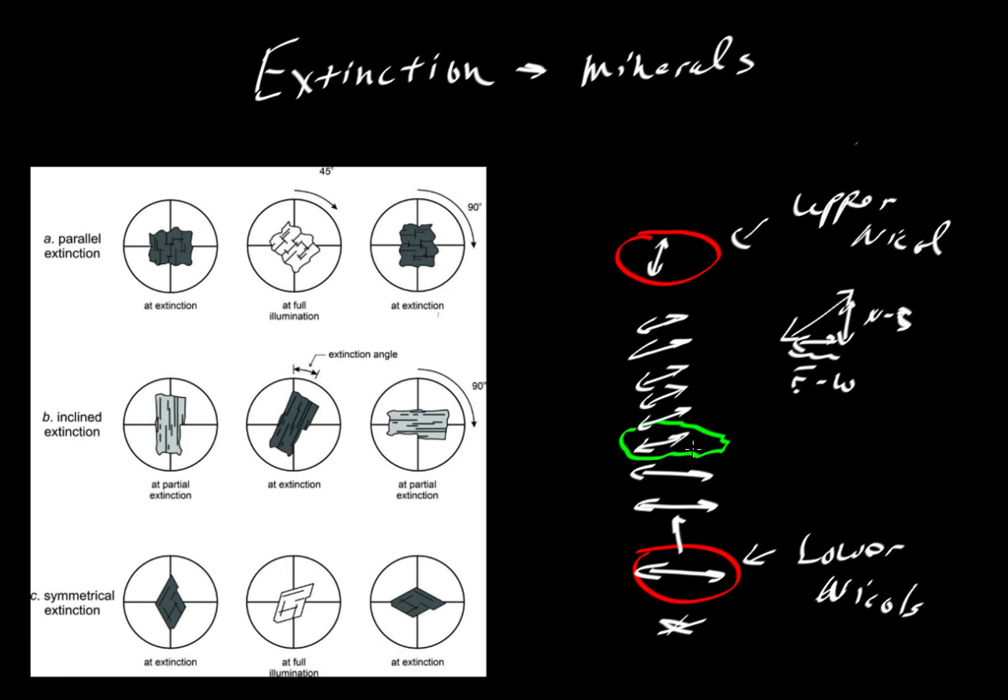What happens if we take this mineral and rotate it so that when that east-west light hits it, it's also vibrating perfectly east-west? We've taken this mineral and rotated it until that vibration direction is east-west. That means there is no north-south direction to pass through that upper nickel. All of the light will be blocked and this mineral will appear dark. When it is dark, we say it is at extinction.